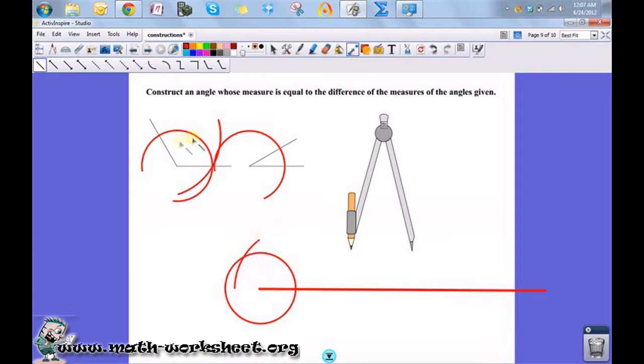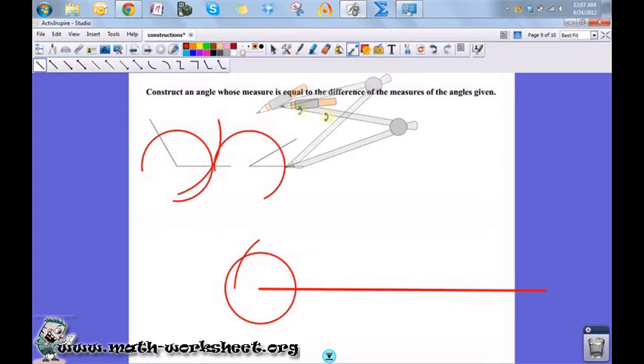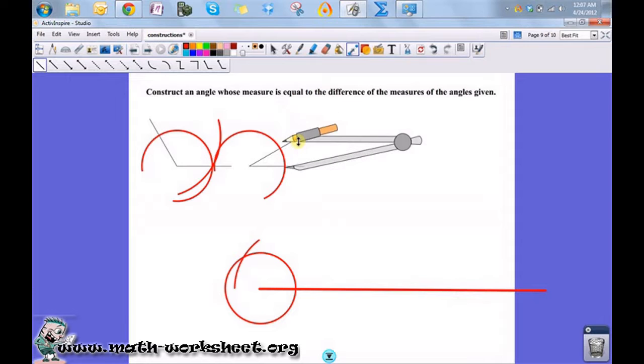But I want it to be that angle minus this one. So now what I'm going to do is measure the distance between the two points where that arc intersects this angle. Just make sure it does work.